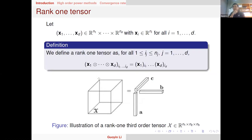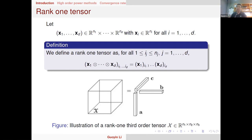A very important special structure is the rank-one tensor, a natural extension of the rank-one matrix. A rank-one tensor has a very specific structure: its entry at indices i1 up to id is the product of the i1-th entry of vector x1, the i2-th entry of x2, and so on up to the id-th entry of xd. When d equals two, this reduces to the rank-one matrix. This is a graphical way of encoding information into a simple tensor structure.